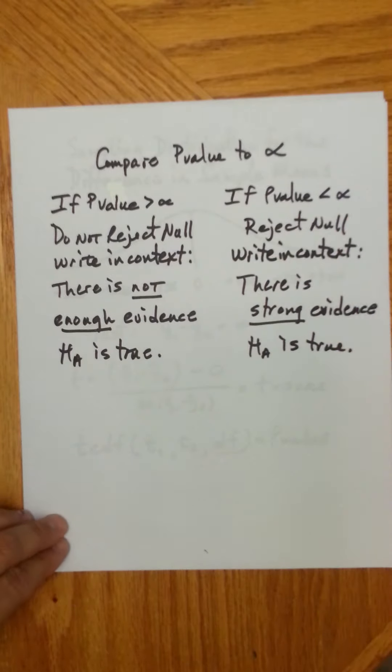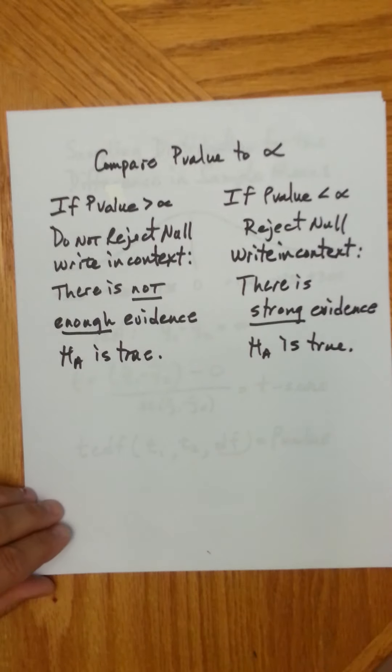If the p-value is less than the significance level, you reject the null, and you say, in context, there is strong evidence that the alternative is true. All of this applies. You could see that you really actually know most of this. The one snafu about all of this is that because we're talking about a numerical trait, and therefore we have underlying t-distributions, we really need to know the degrees of freedom.